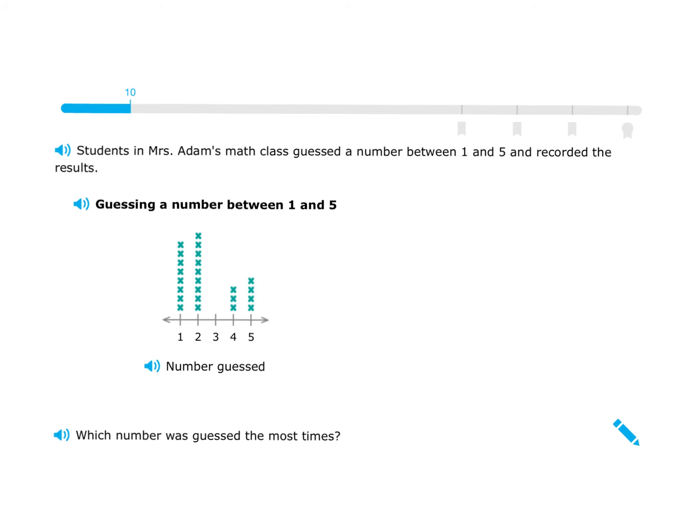What's confusing is they might ask: what's the highest number guessed? Well, the highest number guessed is five. But the most kids guessed two. So the reading on that is kind of tricky.